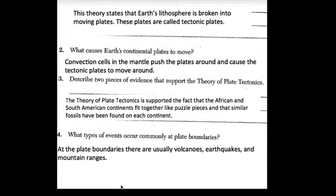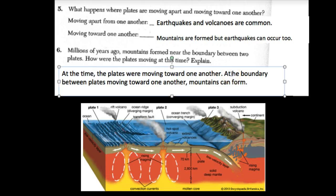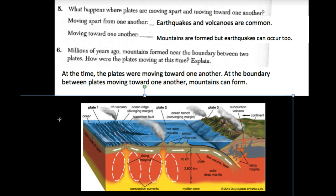Question four: what types of events commonly occur at plate boundaries? At plate boundaries, there are usually volcanoes, earthquakes, and mountain ranges. Question five: what happens where plates are moving apart and moving toward one another? When they move apart, earthquakes and volcanoes can happen. When they're moving toward one another, you can also have mountains, but earthquakes can also occur. Question six: millions of years ago, mountains formed near the boundary between two plates — how were the plates moving? If we're having mountains, they're not moving apart. At the time, the plates were moving toward one another, and at the boundary between plates moving toward each other, mountains can form.